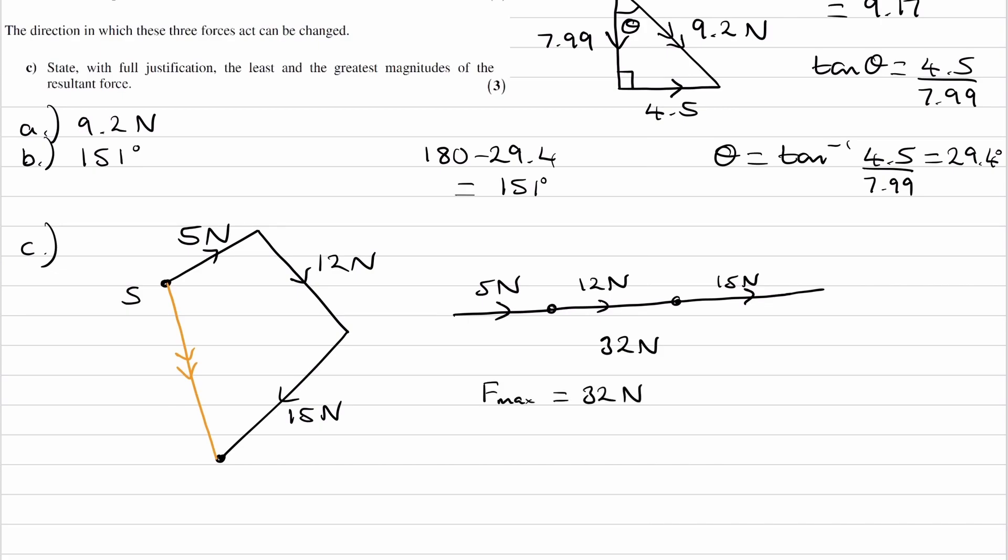So what about the minimum? Well remember that the resultant is this orange line, that connects the start to our finish. We want to make this as short as possible. So can we bring, by altering the angles of these three forces, can we bring this point all the way up to point S, or how close can we get it to point S?